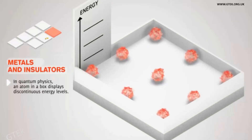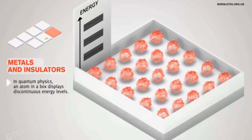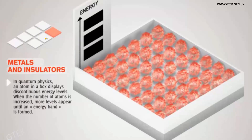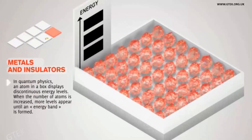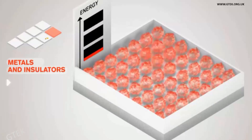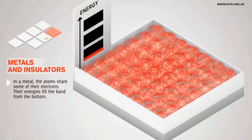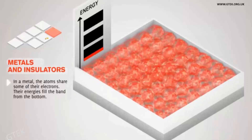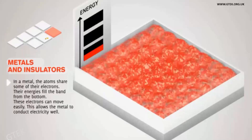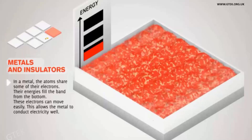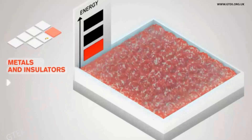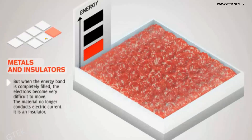Let's see about insulators even more clearly by looking at the energy levels of metals and insulators in quantum physics. An atom in a box displays discontinuous energy levels; when the number of atoms is increased, more levels appear until an energy band is formed. In a metal, the atoms share some of their electrons and their energies fill the band from the bottom — these electrons can move easily, giving the metal its conducting property.